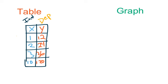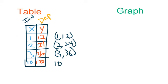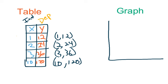From our table we have created our ordered pairs for the graph: (1, 12), (2, 24), (3, 36), and (10, 120). In a graph format, we're just going to look at quadrant one, which is the positive-positive part of the coordinate plane. Let's go ahead and label this graph. The x-axis is the horizontal axis and the y-axis is the vertical axis.